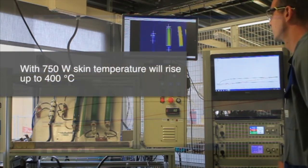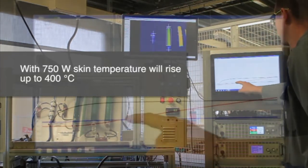With 750 watts the skin temperature will rise to 400 degrees C.